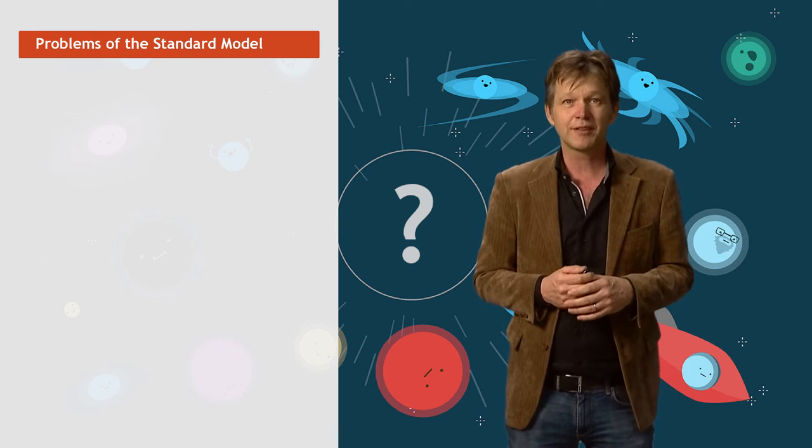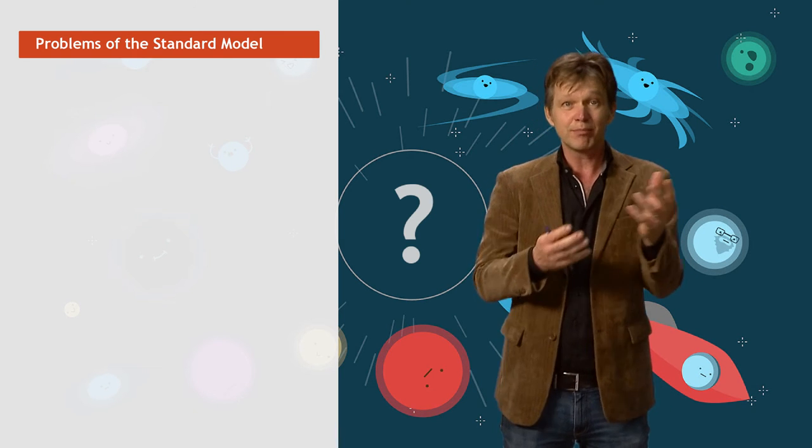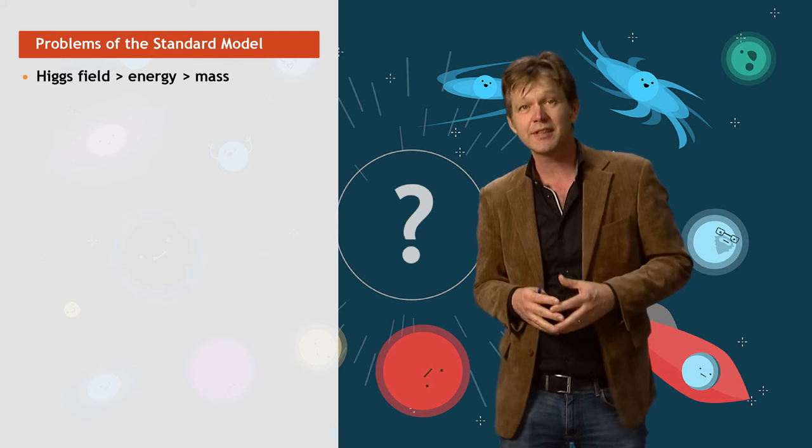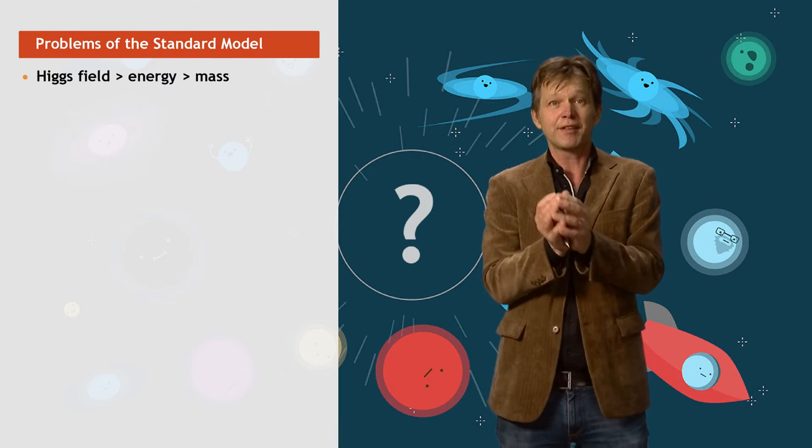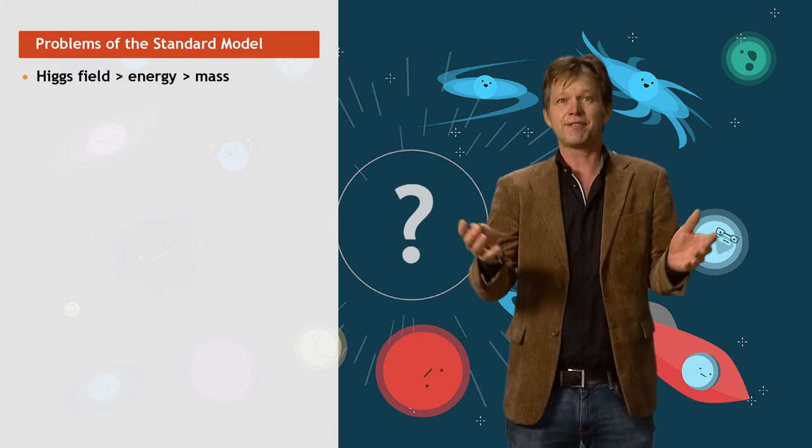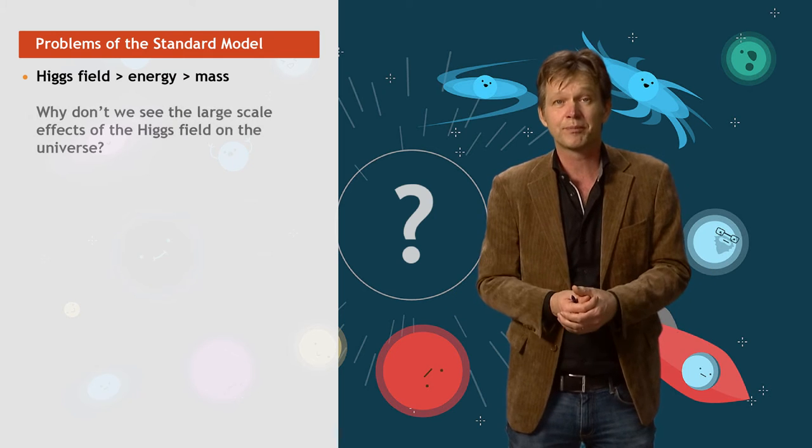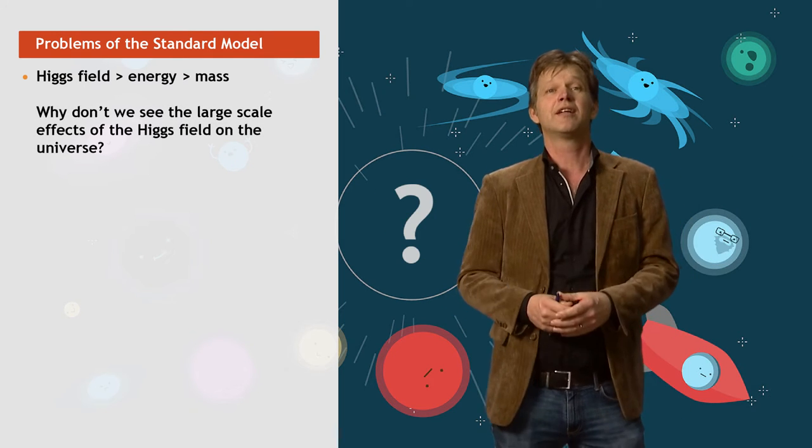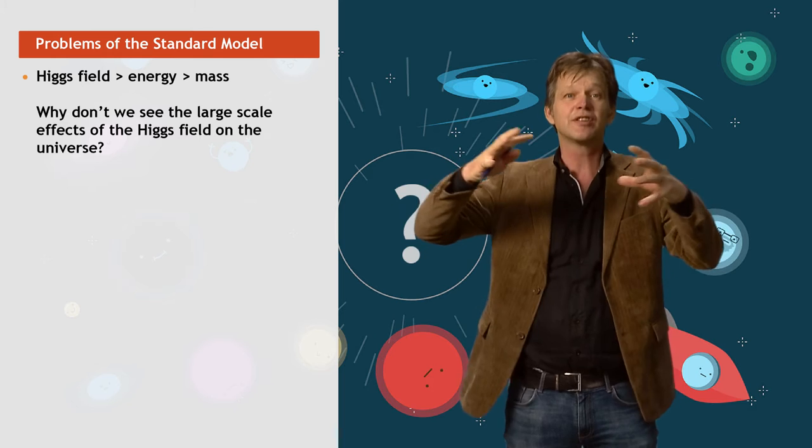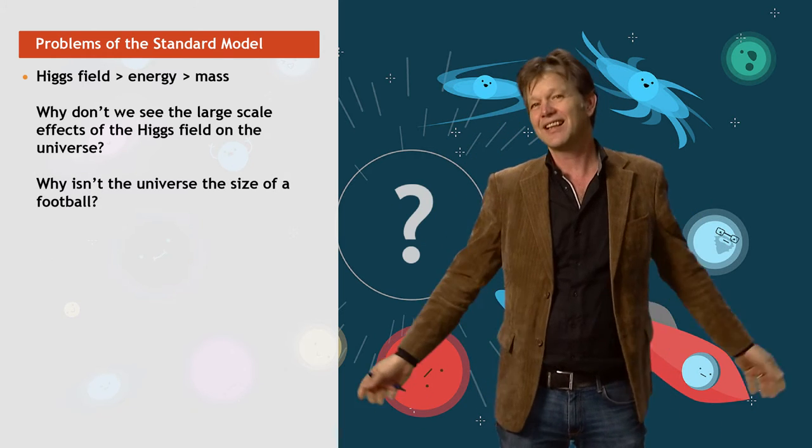First, the Higgs field correspond to an energy in the vacuum. But energy means mass itself, E equals mc squared. It is like space is filled with a large mass throughout the whole universe. So, why don't we see the effects of this large mass at large scales in the universe? Naively, it would mean that the universe would have to be shrinked to the size of a football, a huge cosmological constant, which clearly is not the case.